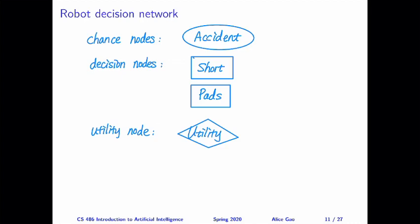Given a story, you should be able to draw the three types of nodes in the decision network. Thank you very much for watching. I will see you in the next video. Bye for now.